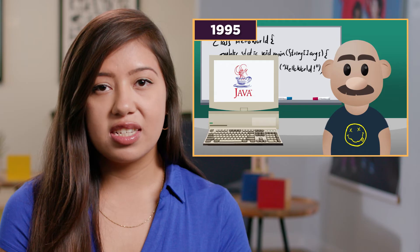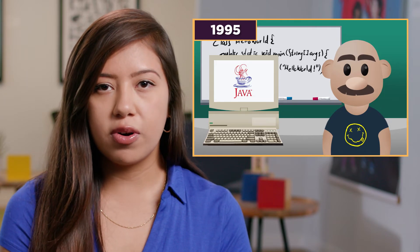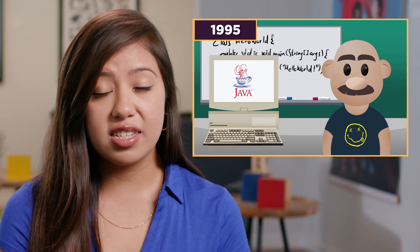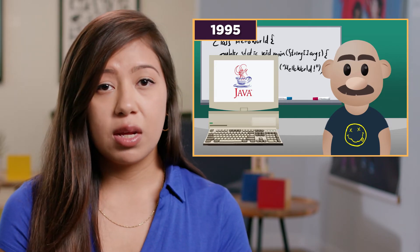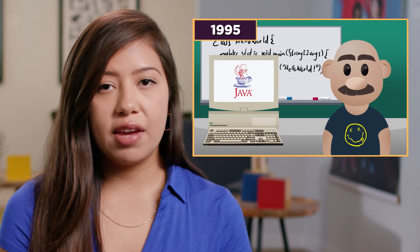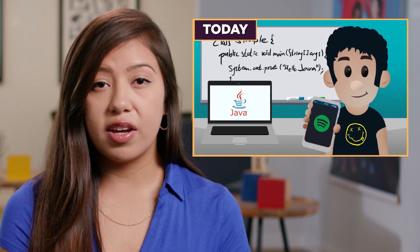Java is one of the most popular programming languages used today. It was first released in 1995 and designed to allow software engineers to write programs that they could easily run anywhere. We use apps and programs that were written in Java every day, like the Android operating system and Spotify.